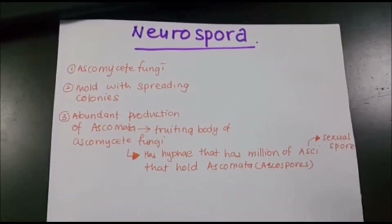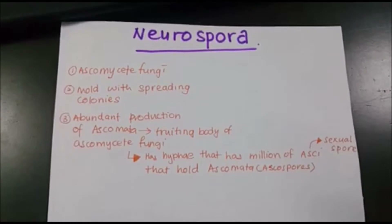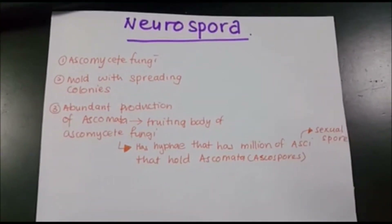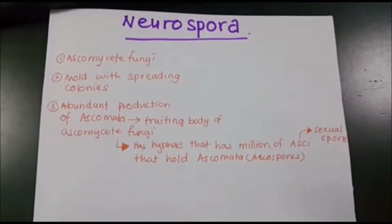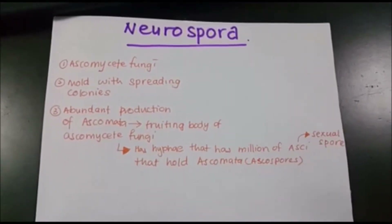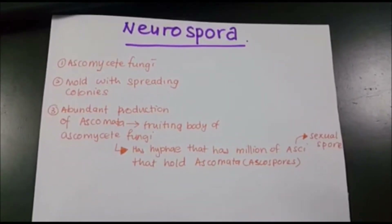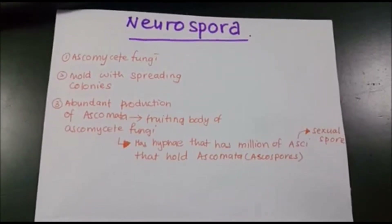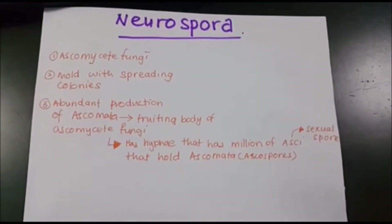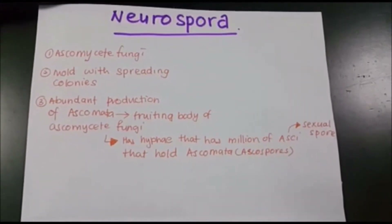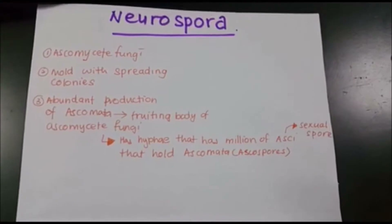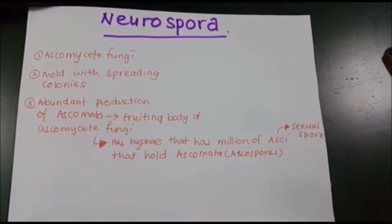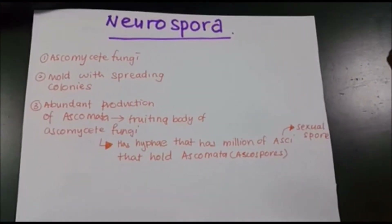Neurospora is also an ascomycete fungi. It has mold with spreading colonies and abundant production of ascomata, which is the fruiting body of ascomycete fungi. Ascomycete fungi have hyphae containing asci that hold the ascospores. Asci are the sexual spores of ascomycete fungi.